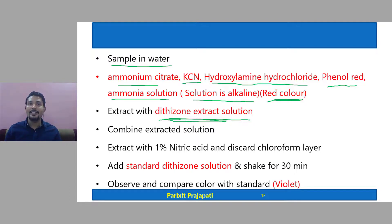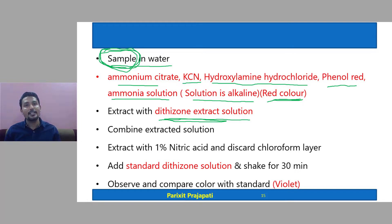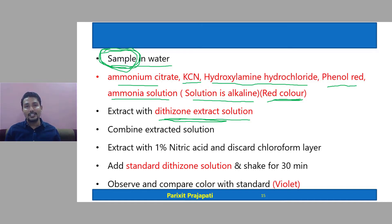The violet color intensity is compared with the procedure performed in the same way using a standard lead solution, where a prescribed quantity of lead is dissolved in water and everything is performed identically. If the test solution shows less violet color than the standard, it passes the limit test for lead; if it shows more, it fails.